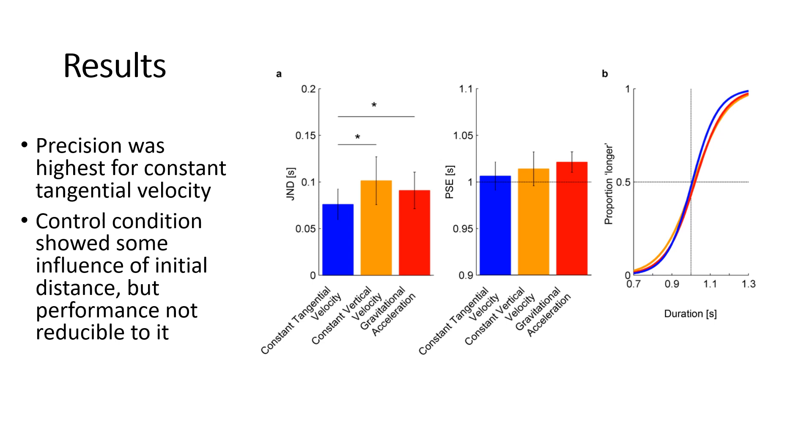Now about the results. In good old science fashion the data did not confirm our hypothesis. We have here the mean JNDs on the left and the mean PSEs on the right and here on the far right we have a depiction of how the average psychometric function would look like for each of the conditions. As you can see there is no differences for the PSEs and we didn't expect that either it's just here for completeness sake basically.